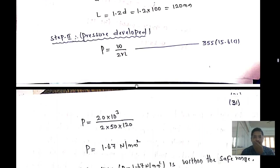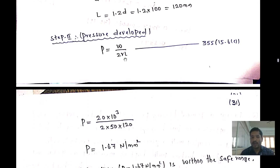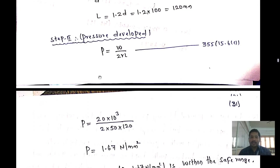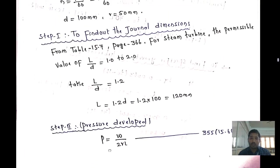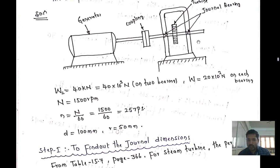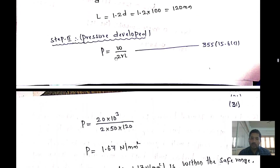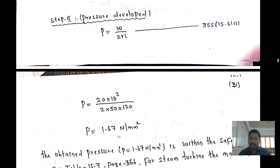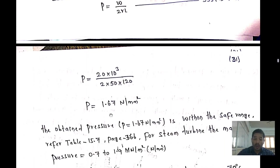Next, we find the pressure developed using the formula P = W / (2 × r × L). The load on each bearing is W = 20 × 10³ N, r = 50 mm, and L = 120 mm. Substituting: P = 20,000 / (2 × 50 × 120) = 1.67 N/mm².